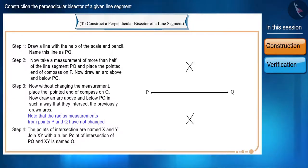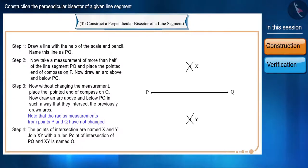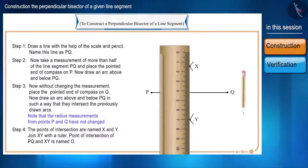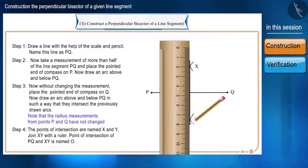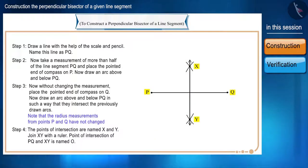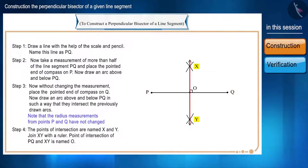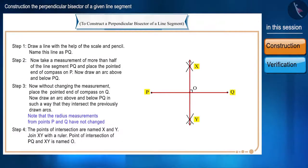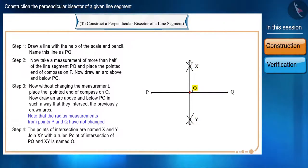Name the intersecting points X and Y respectively, and with the help of a scale, join X and Y. Name the intersection point of PQ and XY as O. The point where line XY intersects line PQ divides the line segment PQ into two equal parts.